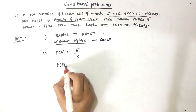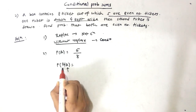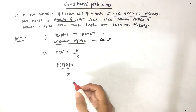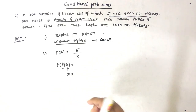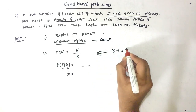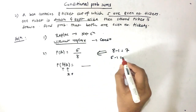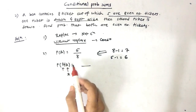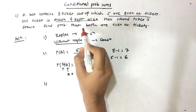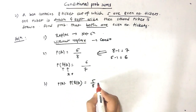For the second ticket we use P(B|A), because after drawing the first ticket it is not replaced. We had 8 tickets; one is gone, so 7 remain. We had 5 even tickets; one even ticket is gone, so 6 remain. Therefore P(B|A) = 6/7. The answer is P(A) × P(B|A) = 5/8 × 6/7.